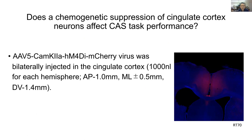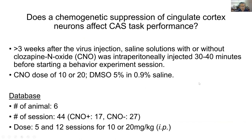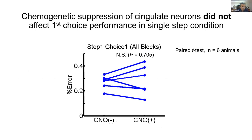We used this CAS task and conducted chemogenetic intervention experiments to test whether suppression of cingulate cortex neurons affects task performance. To test this, we bilaterally injected an inhibitory DREADD virus into the cingulate cortex. We then injected CNO and waited 30 to 40 minutes before conducting the behavioral experiments. We tested six rats and conducted 44 sessions in total.